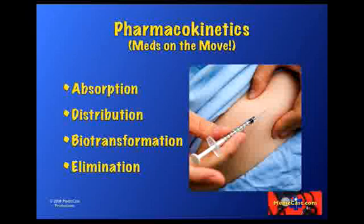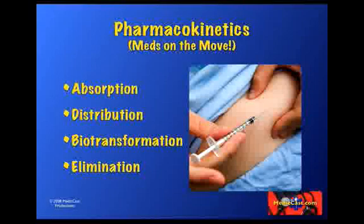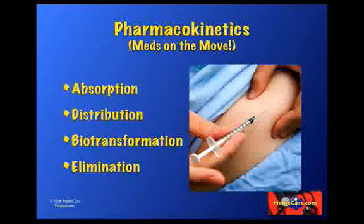Finally, elimination. The body eliminates medications in a number of ways: through the urine via the kidneys, through the GI tract via bile from the liver and feces from the intestines, via exhaled air when the lungs get rid of byproducts that way, and also byproducts can be excreted through the skin or through the mucous membranes, like the nasal tract or in tears. There are other ways that medications can be eliminated, so that's important to understand as well.